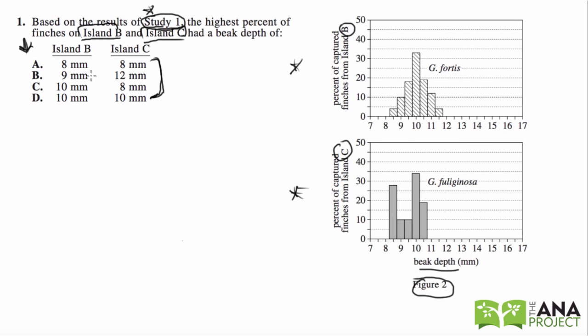So we can get rid of, if we just look at island B, we can get rid of A and B. Just start eliminating. Now let's look at island C. The highest percent is 10. So we can get rid of C. We've already gotten rid of A and B. So we're just left with answer choice D.